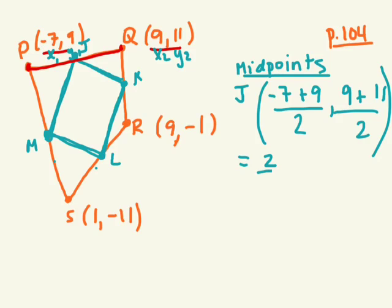2. 2 divided by 2. And 9 plus 11? 20 divided by 2. Let's simplify that. 2 divided by 2? 1. 20 divided by 2? 10.